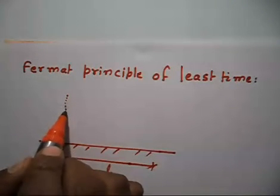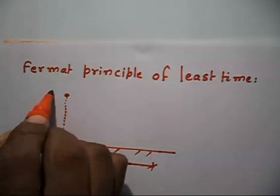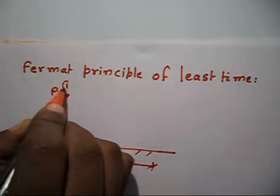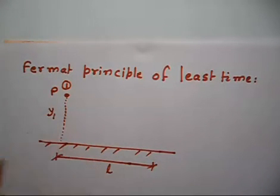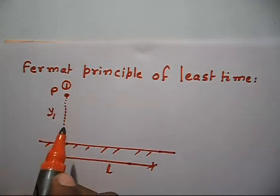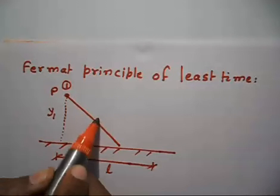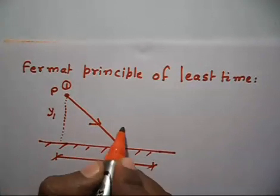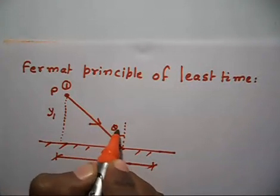Just perpendicular here we have a point — let us call this point 1, point P. This distance is also given; this perpendicular distance is Y1. A light ray comes here and meets this plane mirror at an angle of theta1. This angle is theta1.